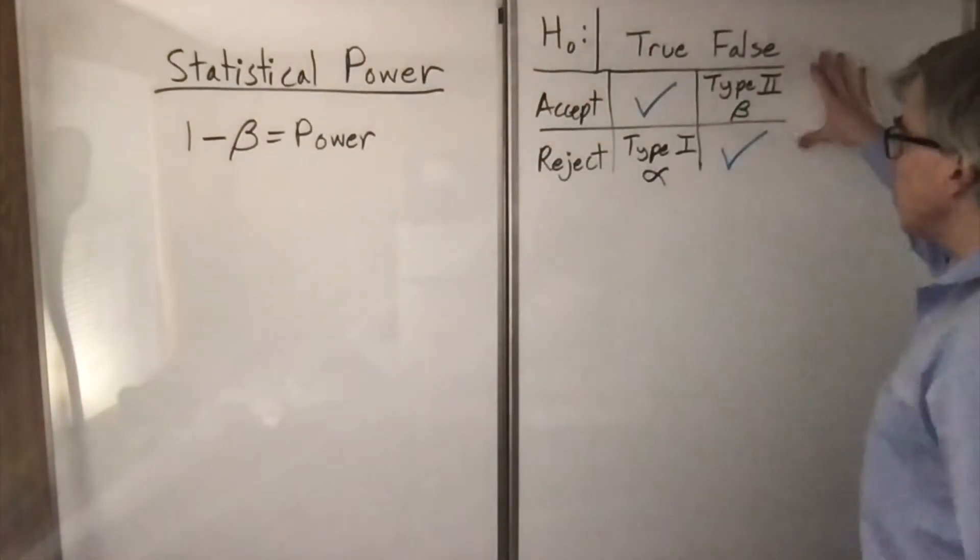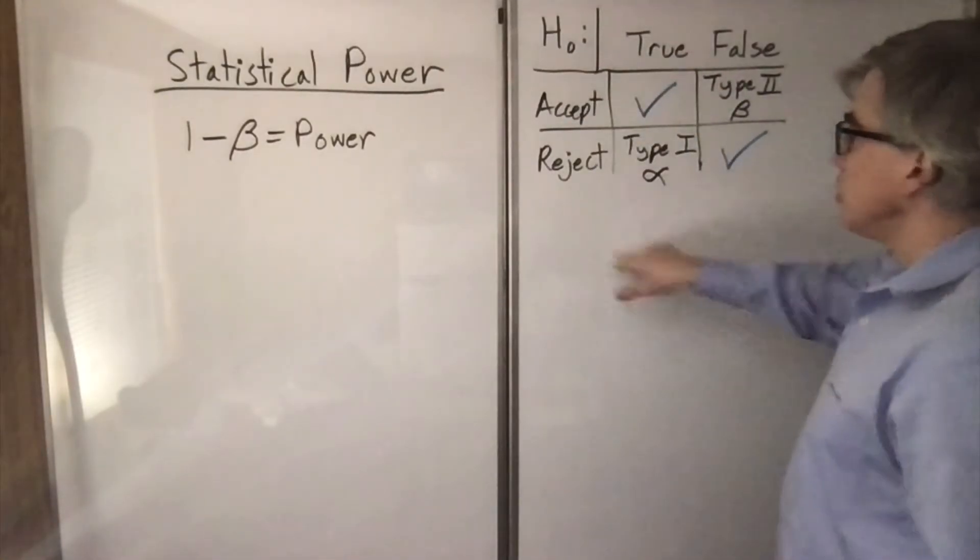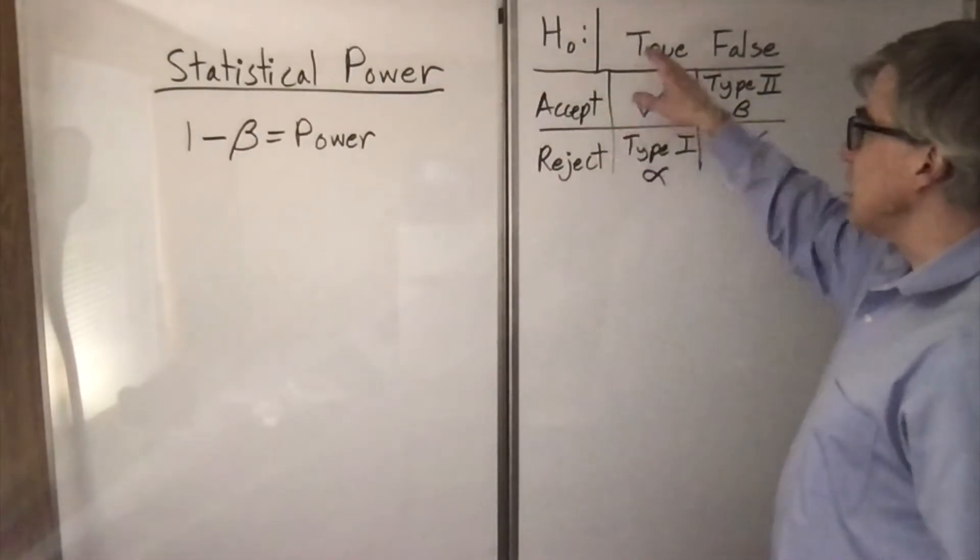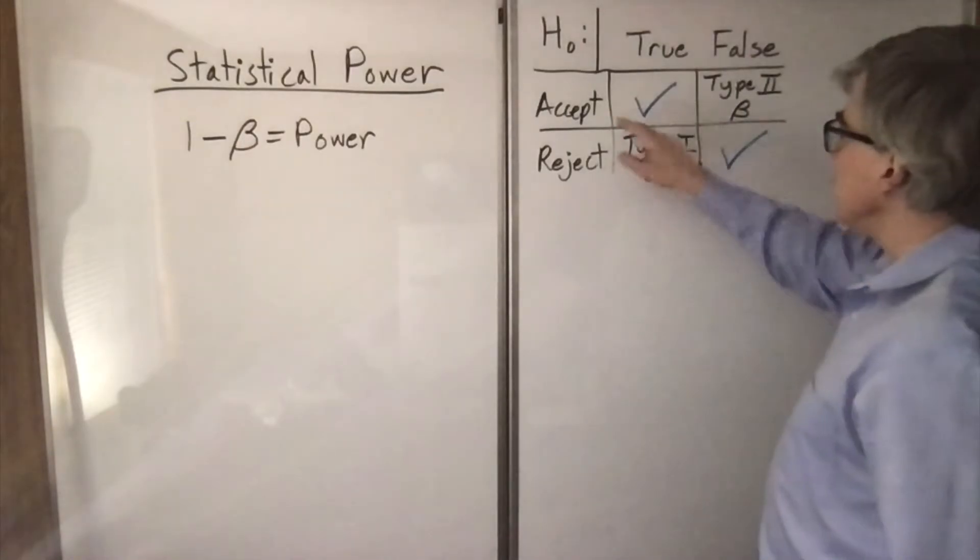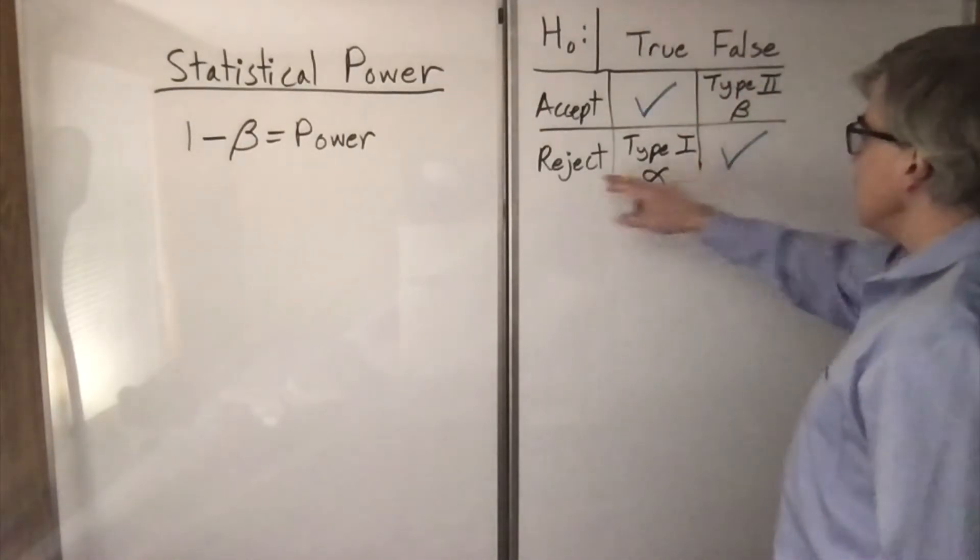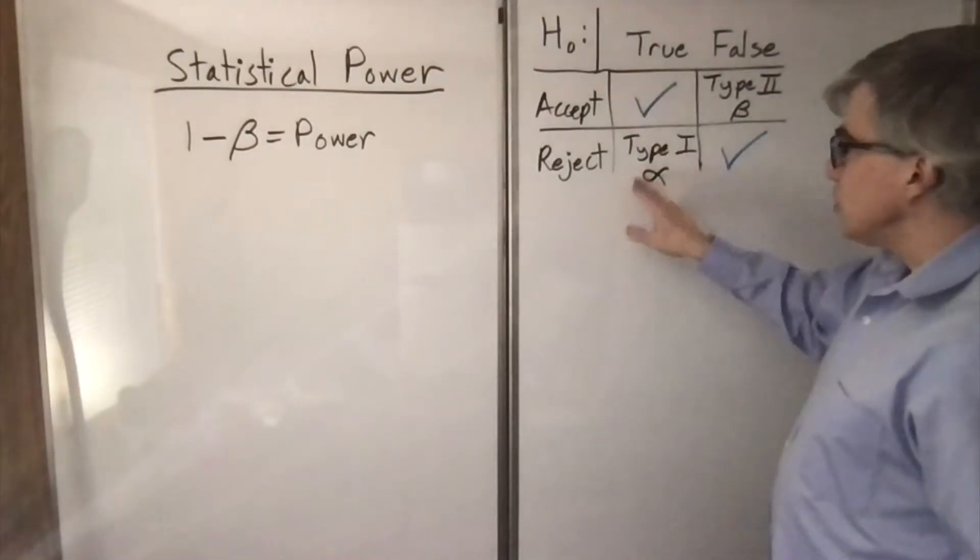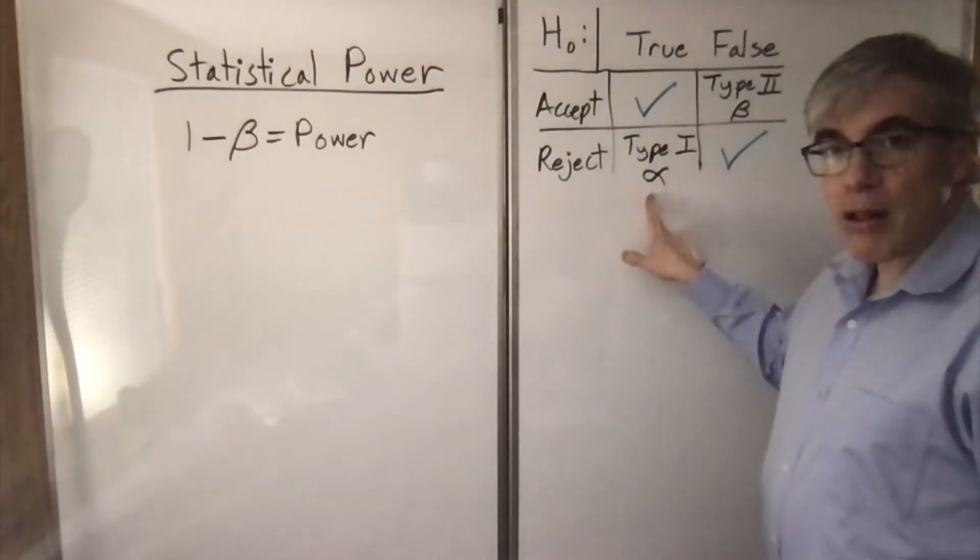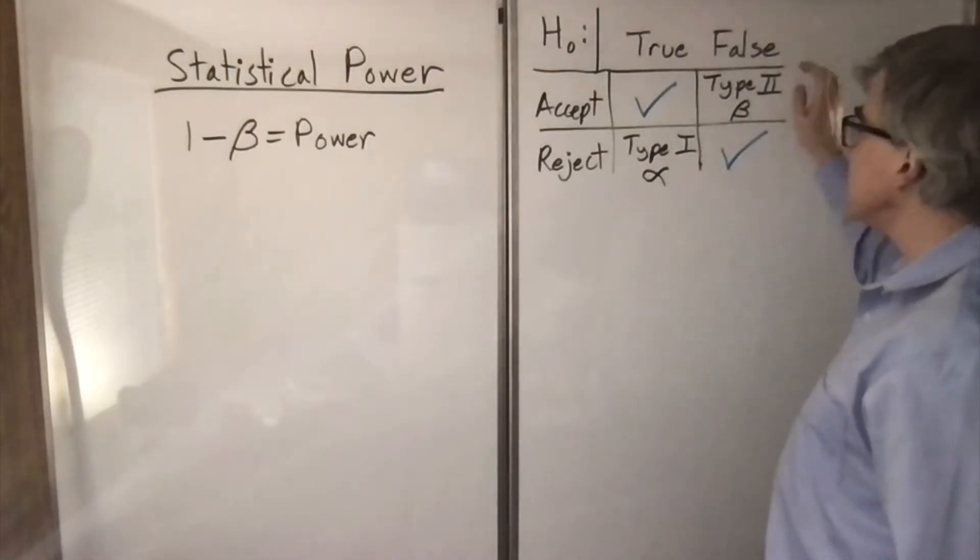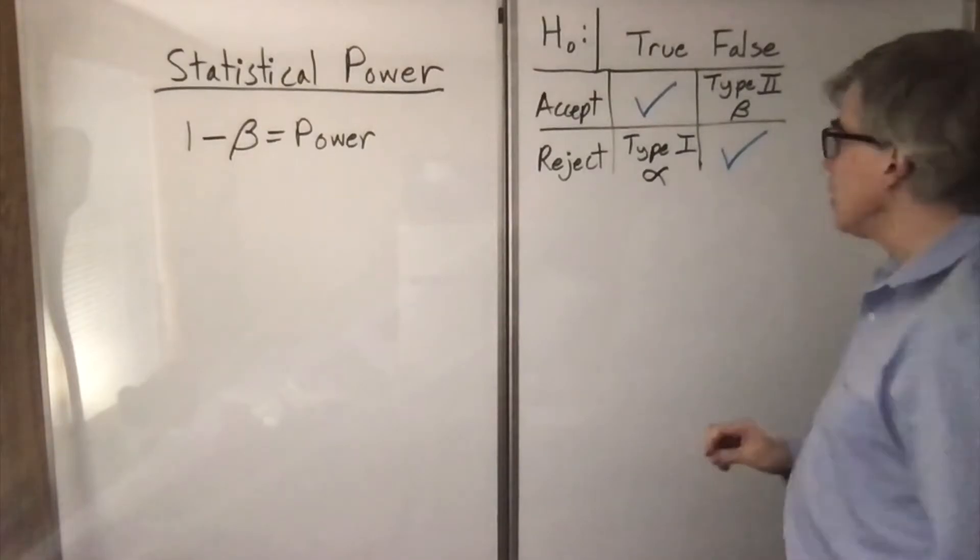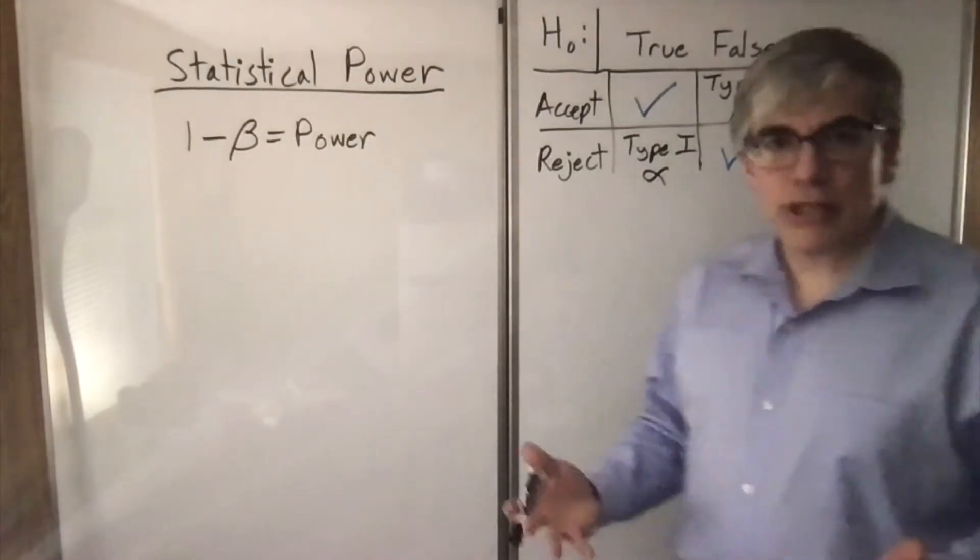What's beta? Remember our null hypothesis table. You either accept it or reject it, and it's either true or false. If you accept it and it's true, great. If you reject it and it's false, great. If it was true but you rejected it, that's type 1, that's alpha, and you get to set that. If it's false and you accept it, that's a probability beta.